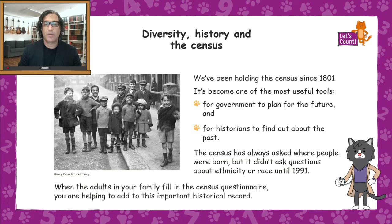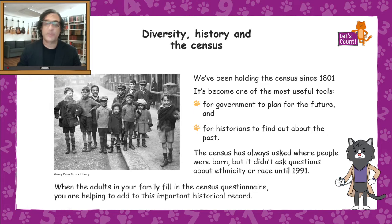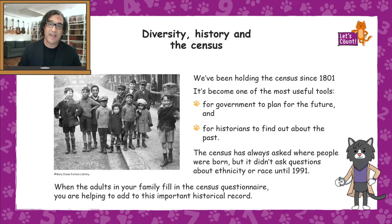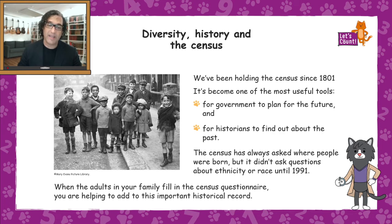This lesson is on diversity, history, and the census. We've been holding the census in Britain since 1801. It's become one of the most useful tools for government to plan for the future, but also for historians to find out all about the past. The census has always asked people where they were born, but it didn't ask questions about people's ethnicity or their race until 1991 — very recently. When the adults in your family fill in the census questionnaire, you are helping add to this important historical record.